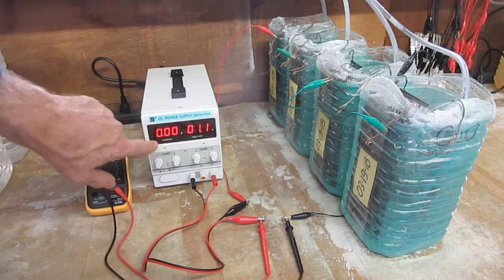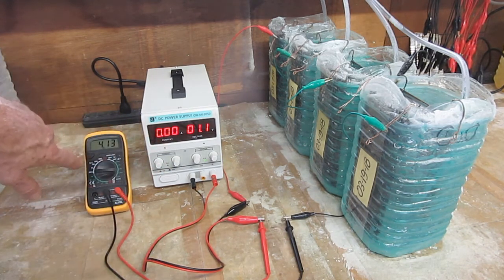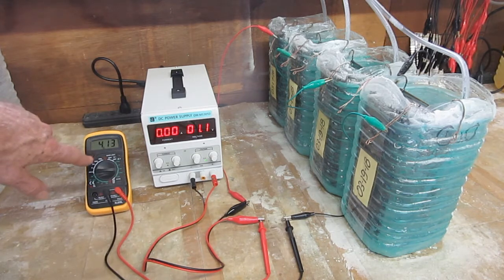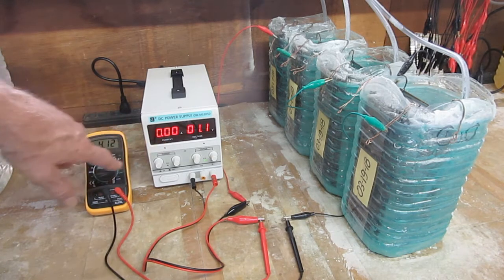So anyway, you'll notice here on the power supply, it still says zero. So without the multimeter, there is no way that you'd be able to know if you're getting 4 milliamps or not. But it is possible to do it.